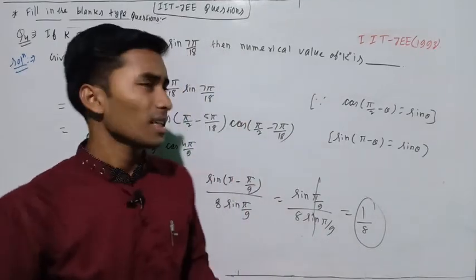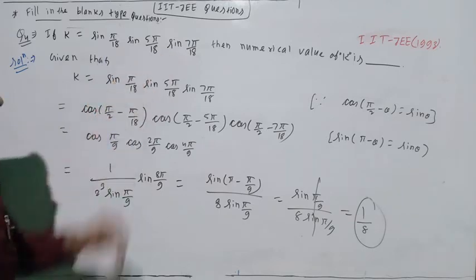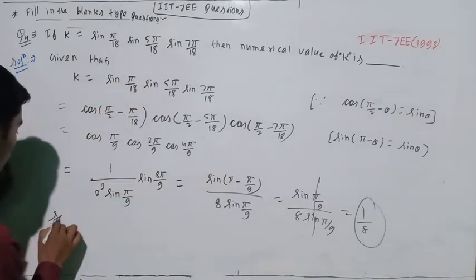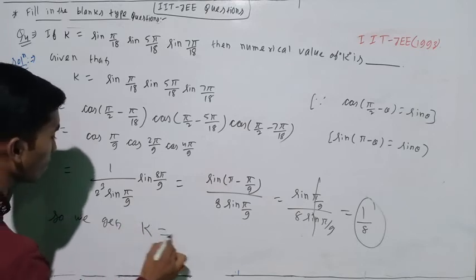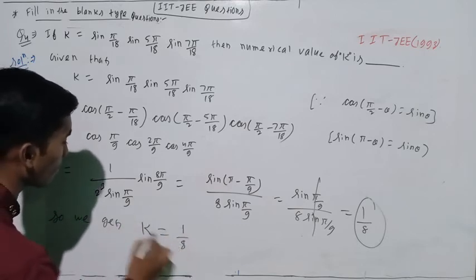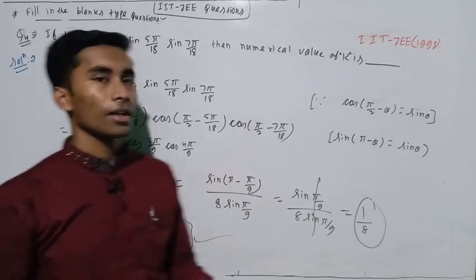This was quite simple. You simply take the three values in the series of sine functions to find the numerical value of k. So k equals 1/8. Thank you very much.